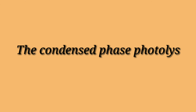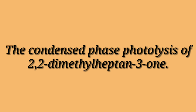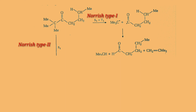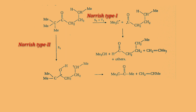The condensed phase photolysis of 2,2-dimethylheptan-3-one shows both Norrish type 1 and Norrish type 2 reactions. The Norrish type 1 cleavage, i.e. alpha cleavage, occurs from both the excited singlet and triplet states, but the Norrish type 2, i.e. gamma hydrogen transfer process, occurs predominantly from the excited singlet state.